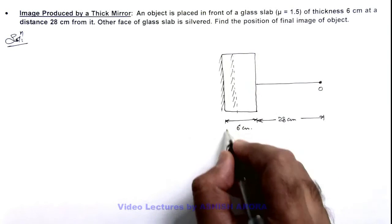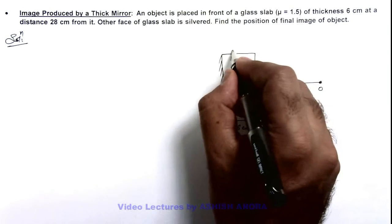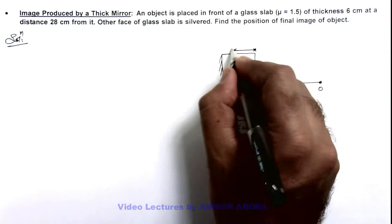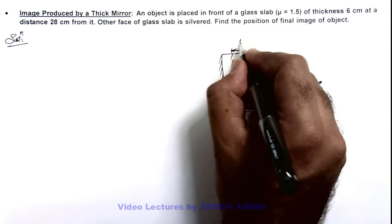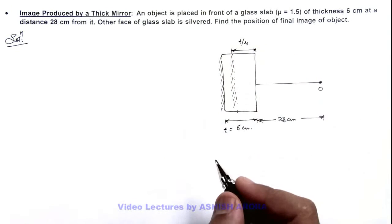And if this thickness is t, we can say the apparent depth of this mirror which appears from the side of the object will be t by μ. Now in this situation...